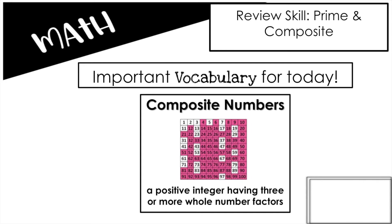Our first vocab word is composite numbers — it means a positive integer having three or more whole number factors. That is a lot of vocab words within a vocab word, so I'm going to break it down. If you look at that chart, it was right on the wall the entire lesson when we had this in the module. Your composite numbers are going to have — the main idea is — three or more whole number factors.